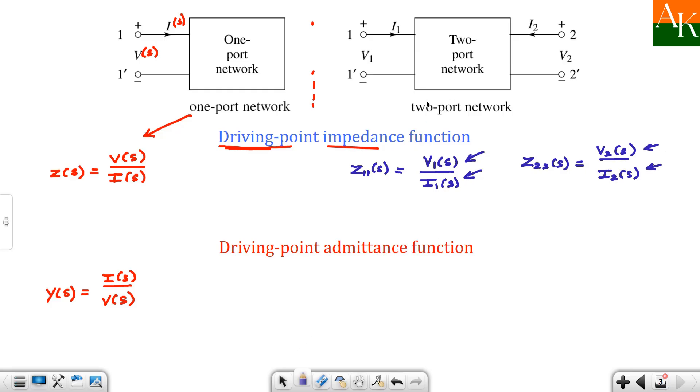Similarly you can define driving point admittance function. For admittance the letter is y, and here it will be y one one of s - one one means you are defining the quantity at the first port. So in the numerator will be i one of s, in the denominator will be v one of s. Y is i by v, z is v by i.